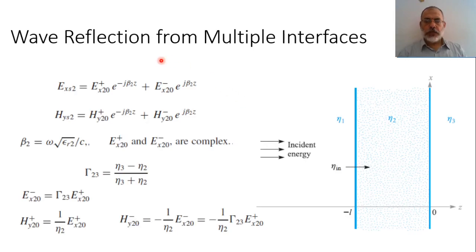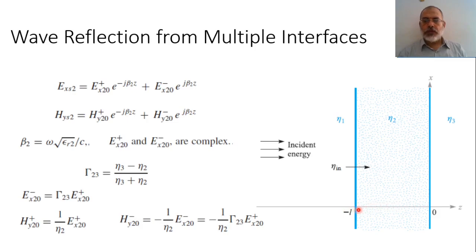Till now we have studied the reflection and transmission coefficient of normal incidence for the case of two semi-infinite media. The question is: what will be the situation if we have a finite slab? Assuming the incident wave is coming from region 1, which extends from Z = -∞ to Z = -L, and is incident on a slab of thickness L extending from Z = -L to 0. After this slab there is another semi-infinite space from 0 to infinity. So now we have three different mediums: 1, 2, and 3.